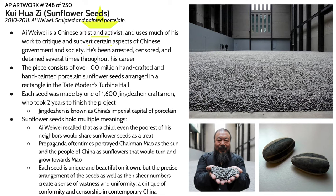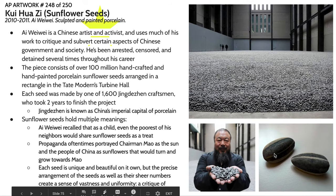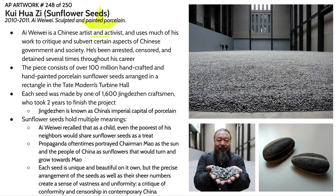There's also a greater narrative about the people of China as a whole. Each of these seeds is individual — it has its own story. They were not just pressed out of a machine. There's a unique care and love that goes into each one, giving it a sense of individuality. No two seeds are exactly alike, just like people. But the precise arrangement of these seeds in massive piles in this regimented space creates a vastness and sense of uniformity, intended to critique the conformity and censorship that Ai Weiwei perceives as defining a lot of contemporary China.